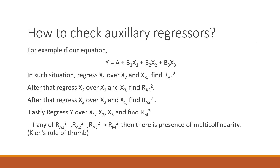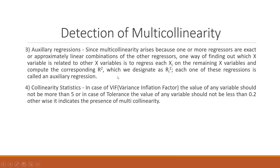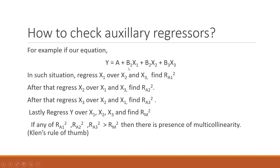How to carry out auxiliary regressions? Suppose our equation is y = a + b1x1 + b2x2 + b3x3. Regress x1 on x2 and x3 (treating x1 as the dependent variable) and obtain Ra1-squared. Then make x2 the dependent variable and regress on x1 and x3 to get Ra2-squared. Similarly for x3. Then carry out the overall regression with y as the dependent variable to get Rm-squared. If any of Ra1-squared, Ra2-squared, or Ra3-squared is greater than Rm-squared, there is a presence of multicollinearity. This is known as Klein's rule of thumb.